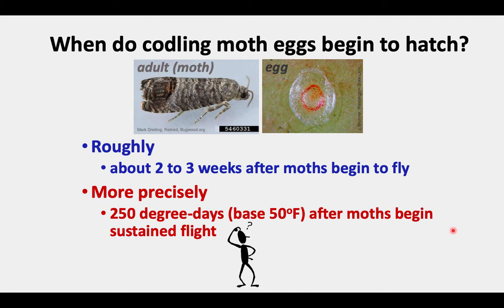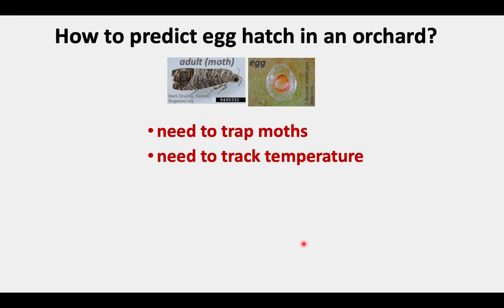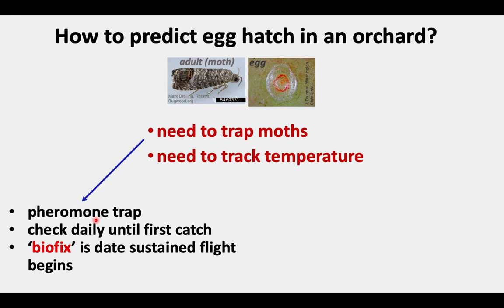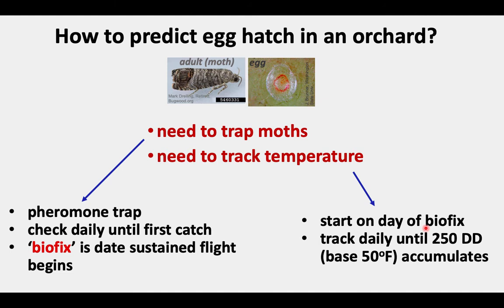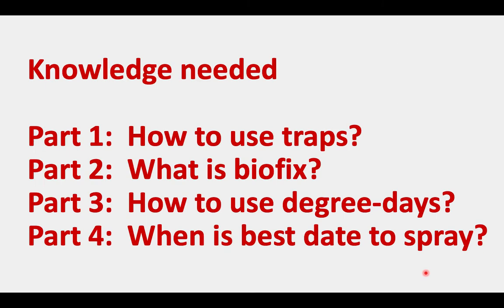How do we figure that out? We need to know how to predict egg hatch in an orchard. For that, you need to trap moths and you need to track temperature. To summarize: you need to trap moths using a pheromone trap that is checked daily until you get first catch. Then a biofix is the date of sustained flight. You need to start on the day of biofix and track temperature daily until about 250 degree days, base 50, accumulates.